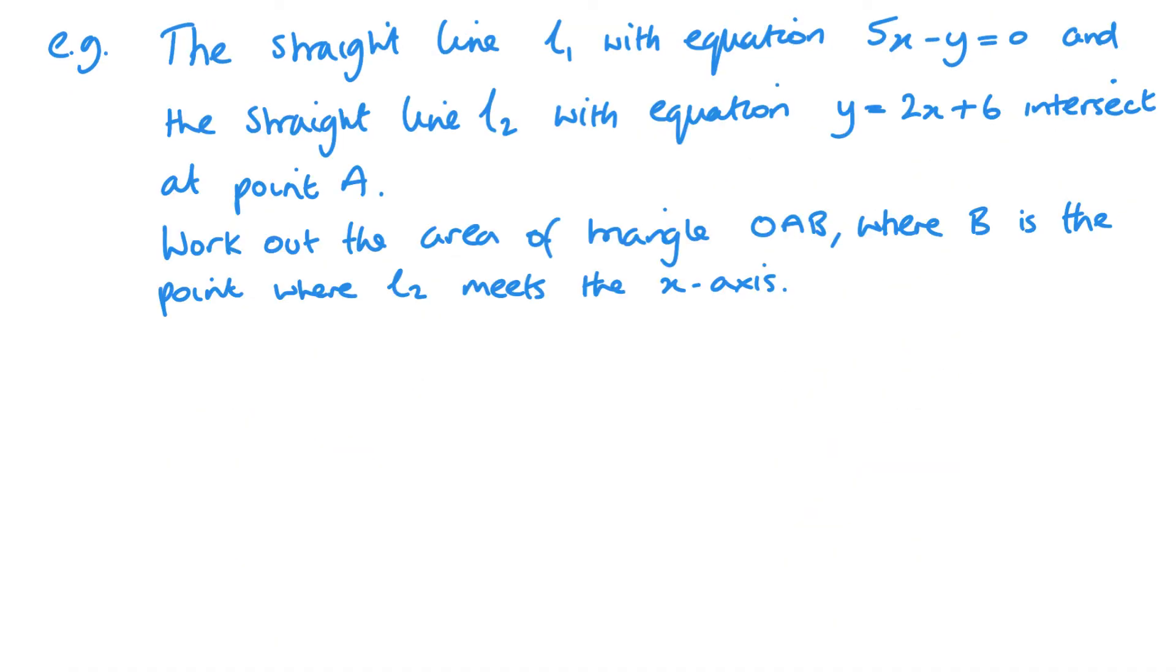So we've got two lines here, two straight lines. And I can see that where they intersect at the point A. So I want to find that first of all. So we've got 5x minus y equals 0, and y equals 2x plus 6.